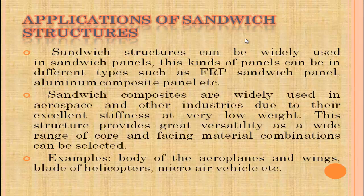Applications of sandwich structures: sandwich panels can be of different types such as FRP sandwich panels, aluminum composite panels, etc. Sandwich composites are widely used in aerospace and other industries due to their excellent stiffness at very low weight, providing great versatility with a wide range of core and facing material combinations. Examples include the body and wings of airplanes, blades of helicopters, and micro air vehicles.